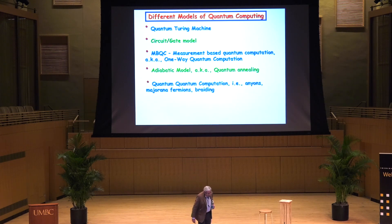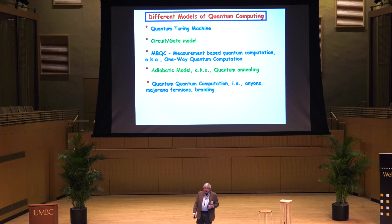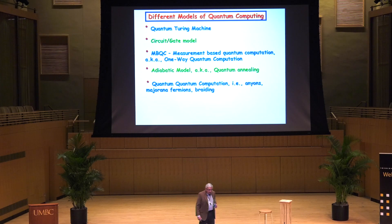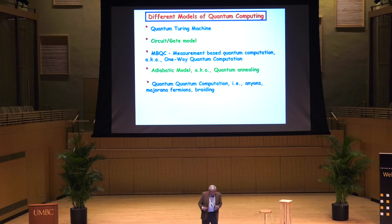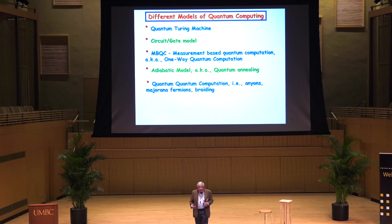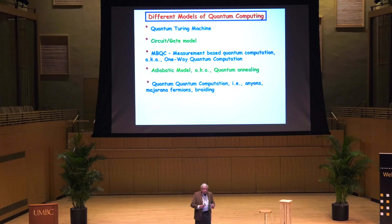And then there is topological quantum computation, where one uses quasi-particles called anyons and Majorana fermions — it's a concept of braiding and so forth. The key feature here is that not much error correction is needed; there's a natural topological obstruction barrier to the whole system decohering.